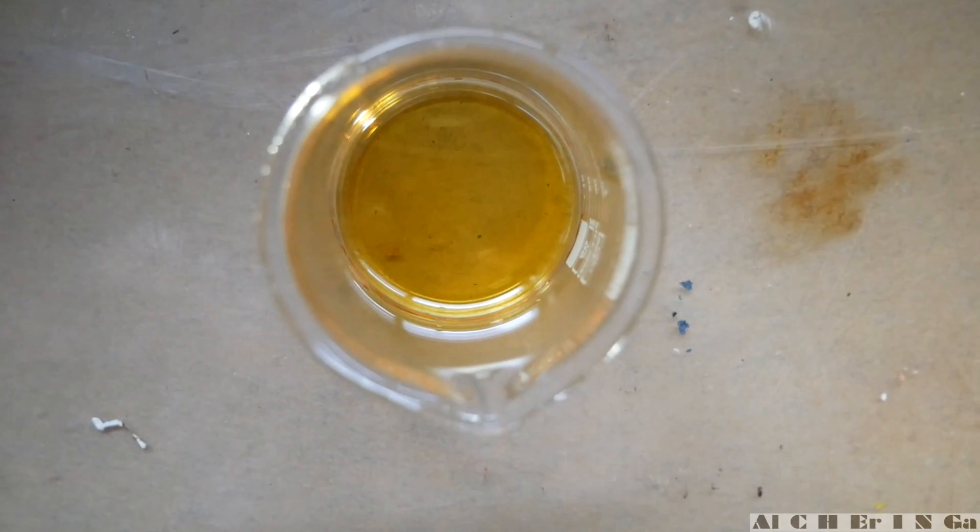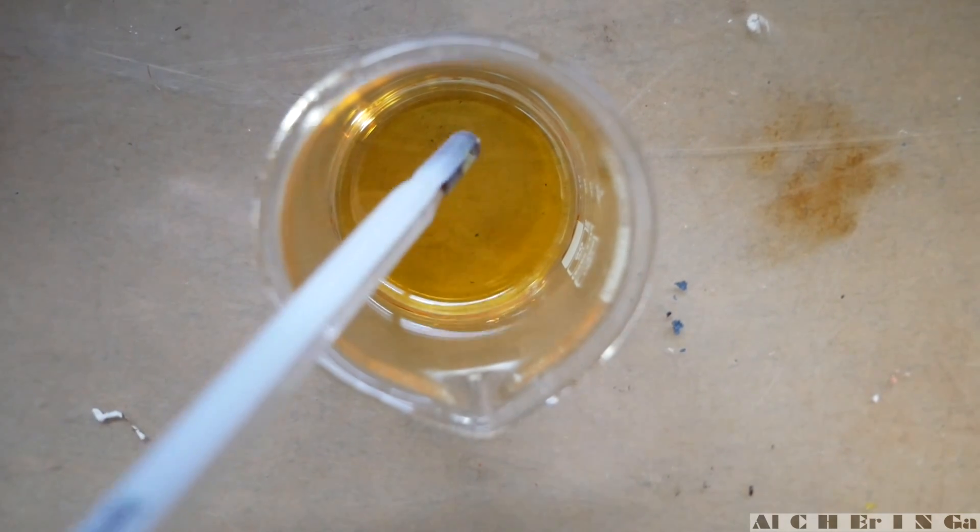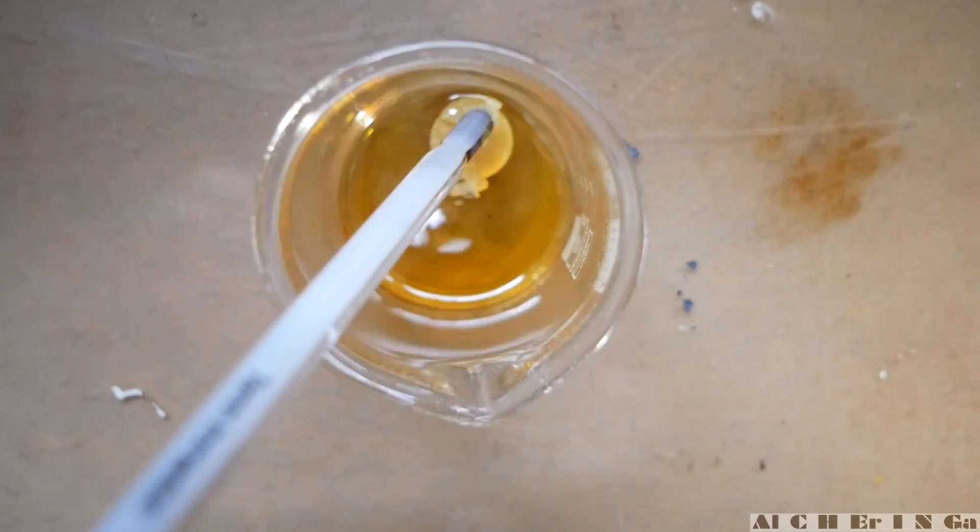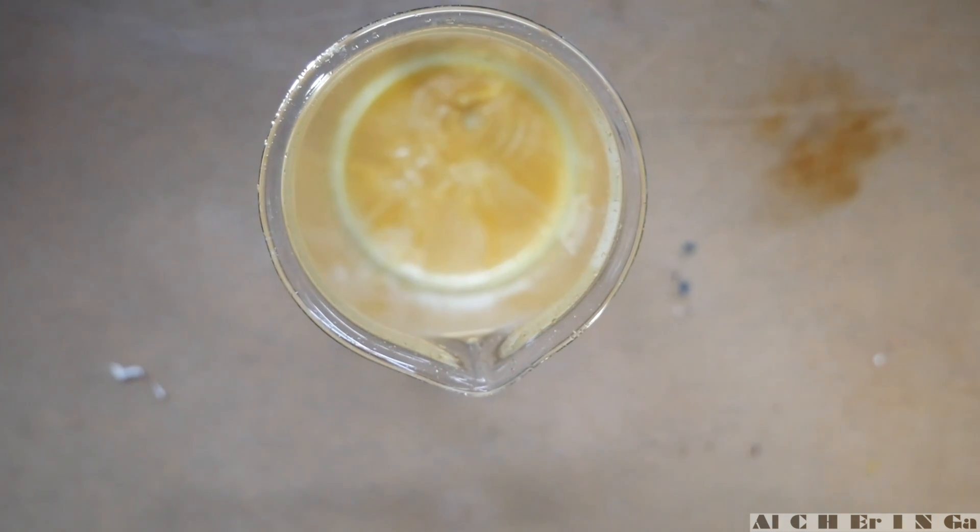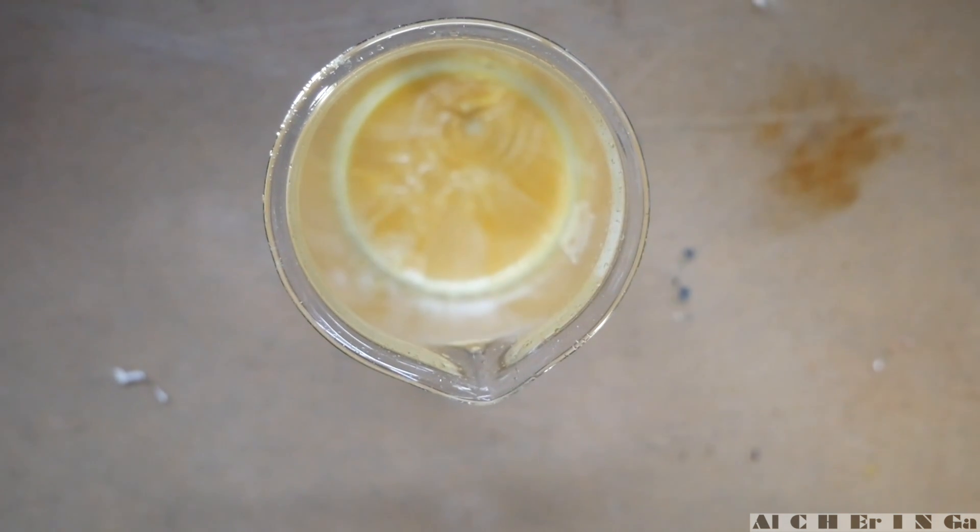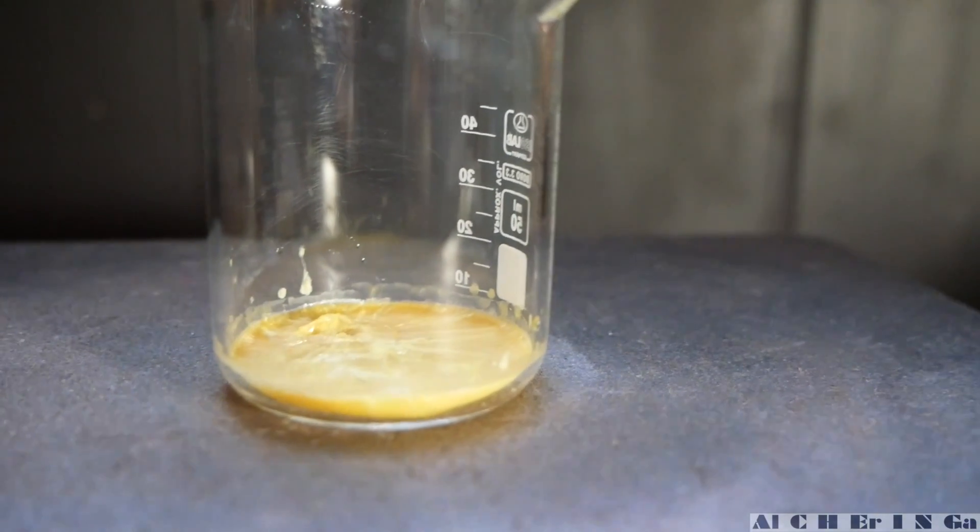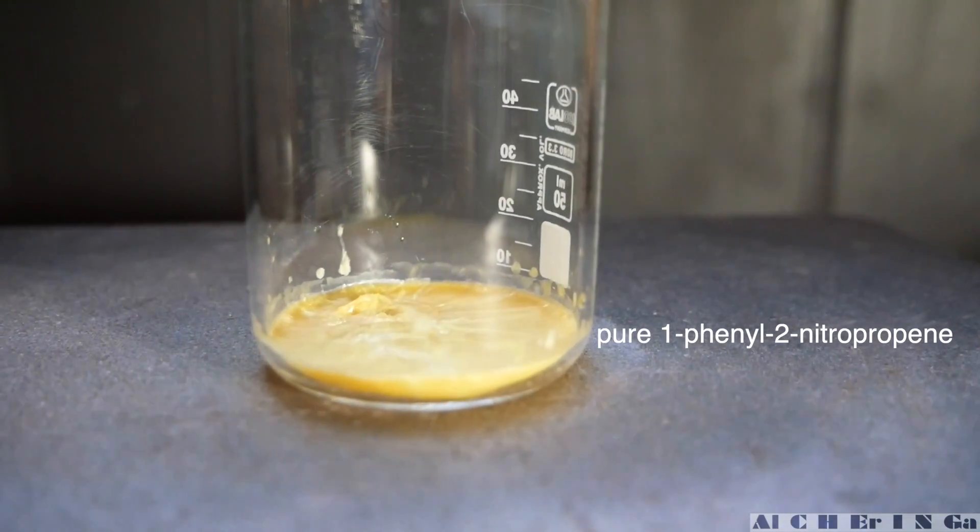Now we have to induce crystallization on the solution. Get a speck of 1-phenyl-2-nitropropene crystal on the end of a glass rod or glass thermometer and poke the solution. Immediately we see a rapid formation of a yellow crystalline mass. This should be pure 1-phenyl-2-nitropropene.